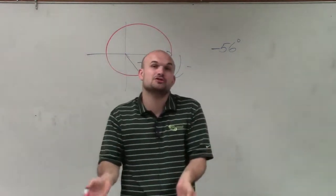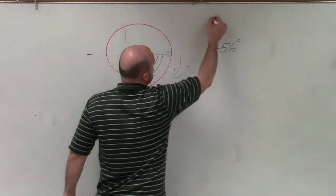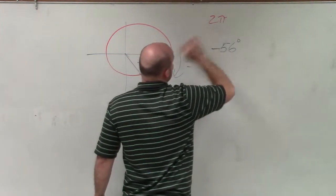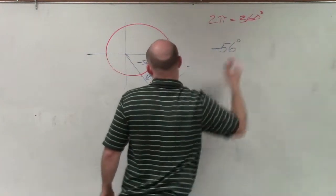So how do I represent this distance from here all the way to here? Well, in radians, we represent that as 2π because that's a complete revolution. But in degrees, we represent that as 2π equals 360 degrees.